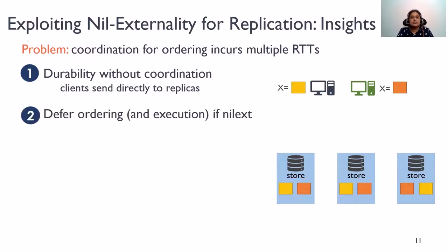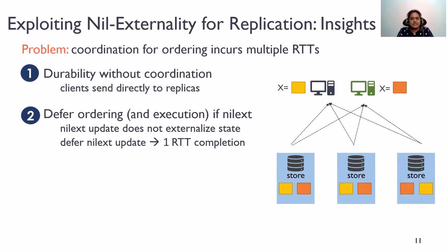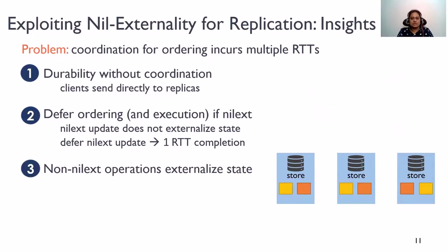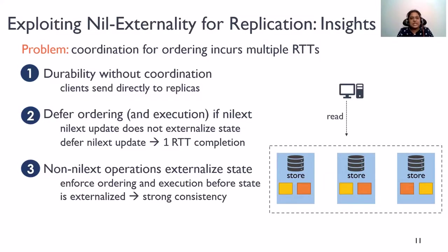Yes, we realize that it's indeed possible to defer ordering if the update is nilext. Since a nilext update does not externalize the system's state immediately, it can be ordered and applied lazily. Since the updates are nilext here, the replicas respond to the clients without ordering and complete the request in one round trip. However, later non-nilext operations may externalize the effects of these nilext operations. For instance, a read to a piece of data modified by a nilext update. So, the nilext updates must be still applied in the same order across replicas.